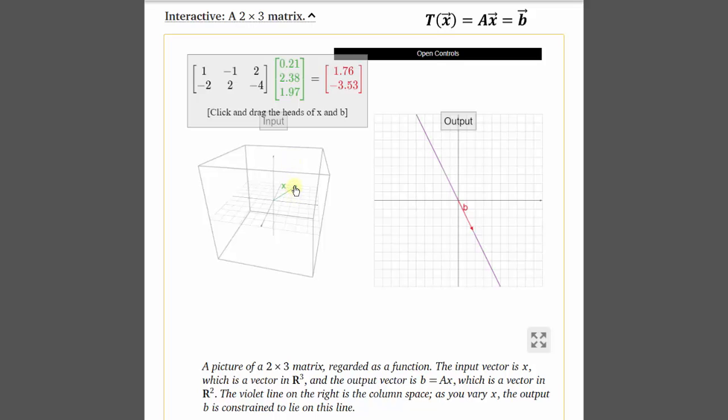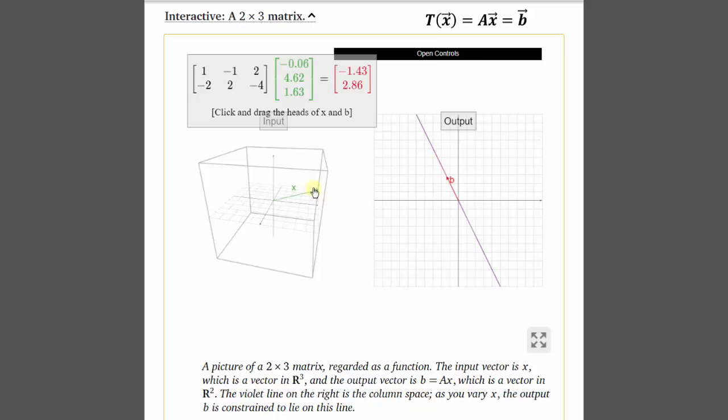As we animate the vector X, the input vector, we can see the corresponding output vector, vector B in red. So if we pause here for a moment, we can say the output vector B is an image of vector X under T. We can also say for every output vector B, vector X is the preimage. Also notice, while the codomain is R^2, the actual range is just the purple line, because notice how under this transformation, all the vectors B fall on the purple line in R^2.